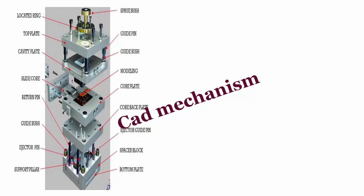Core plate: used to make the structure of products. It can attach the ejector system and coolant system.